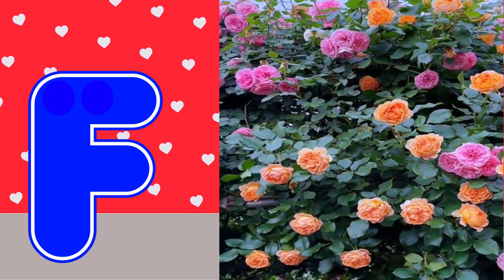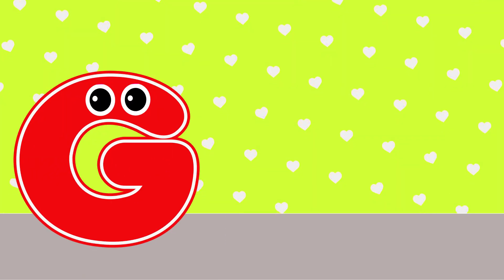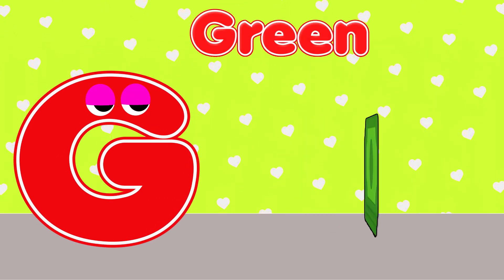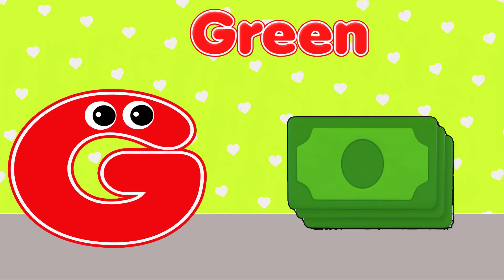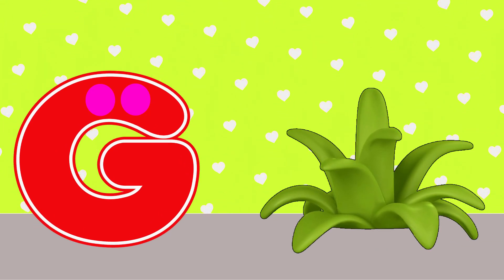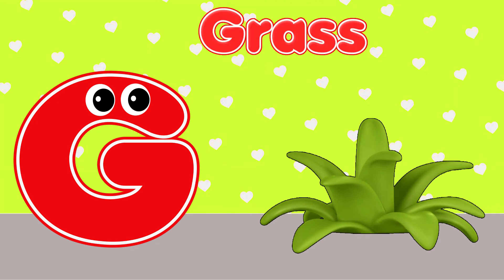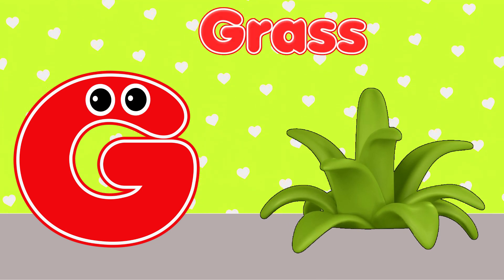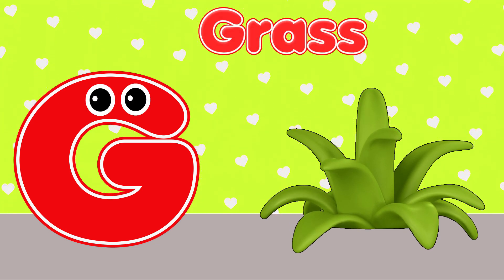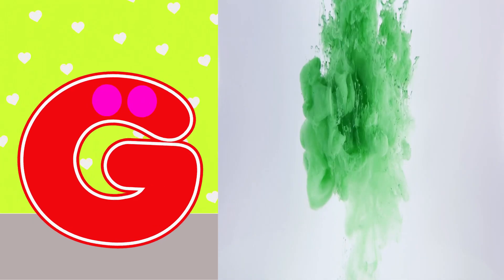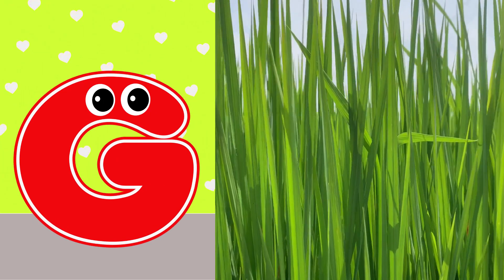G is for Green. G-G-Green. G is for Grass. G-G-Grass. G is for G-G-Green. G is for G-G-Grass.